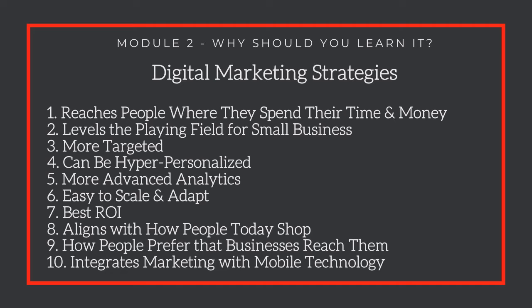Number eight: it aligns with how people today shop. Mainly during this quarantine period, most people have been increasing their use of social media tools to sell or buy things. We have so many different websites such as eBay and MercadoLivre that sell things to the public.